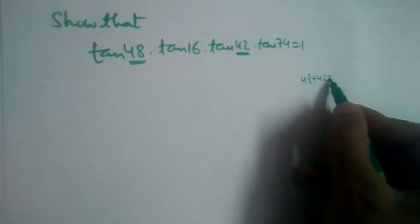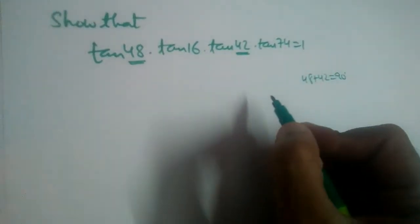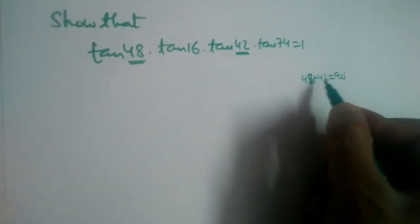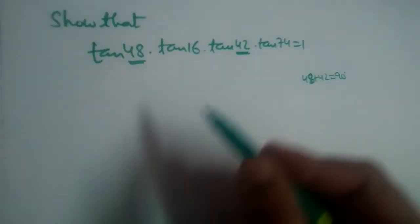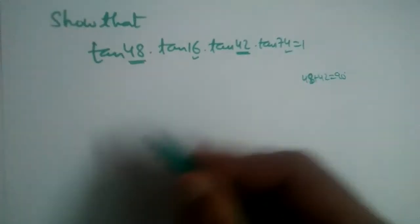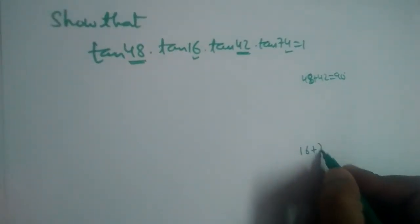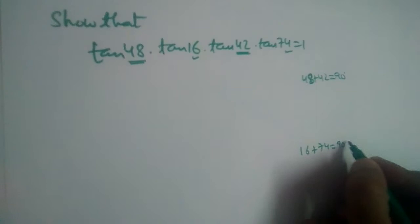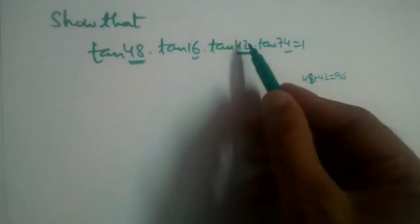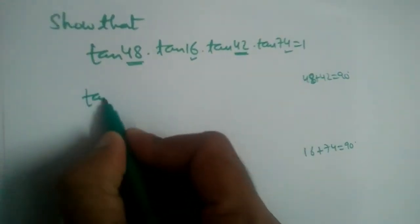48 plus 42 is 90 degrees, and 16 and 74 is also complementary. 16 plus 74 if we add we'll get 90 degrees. So let us write these complementary angles side by side.